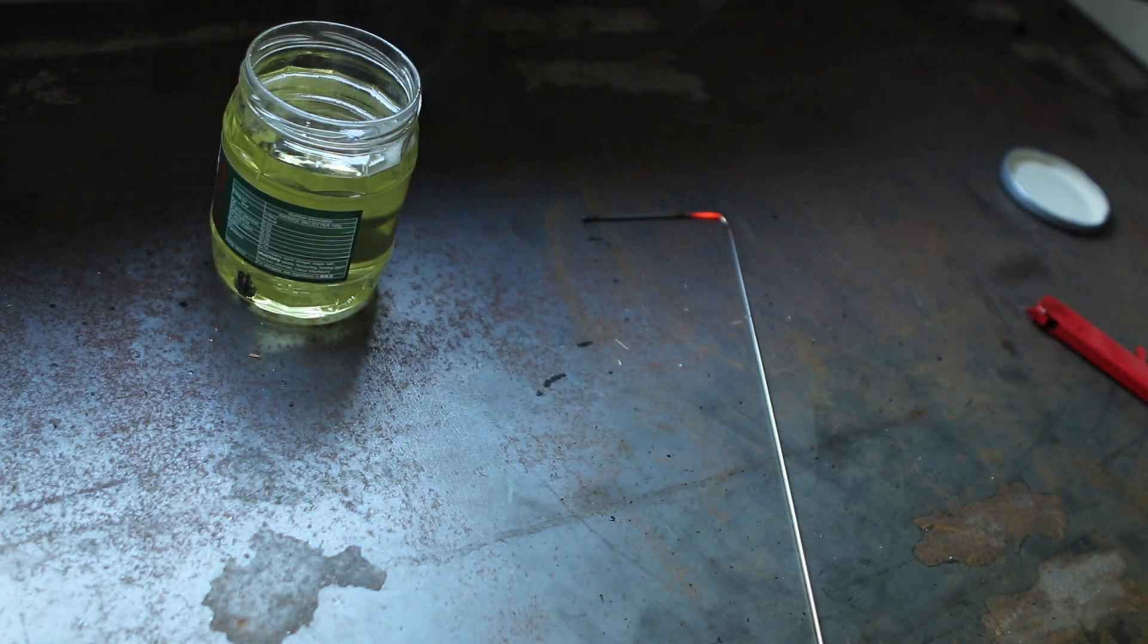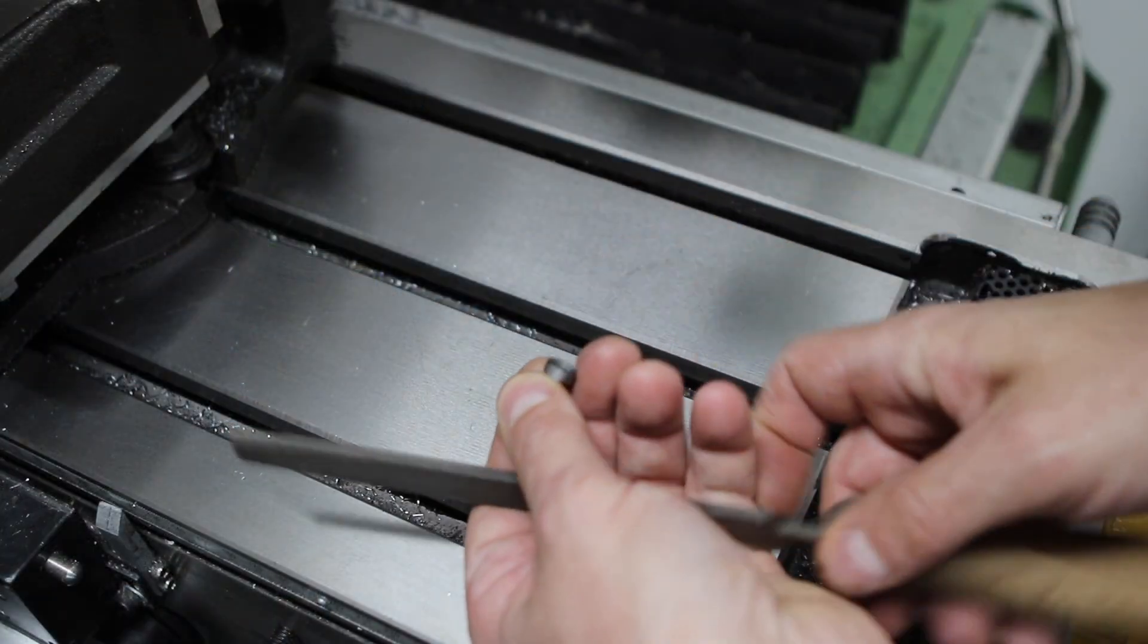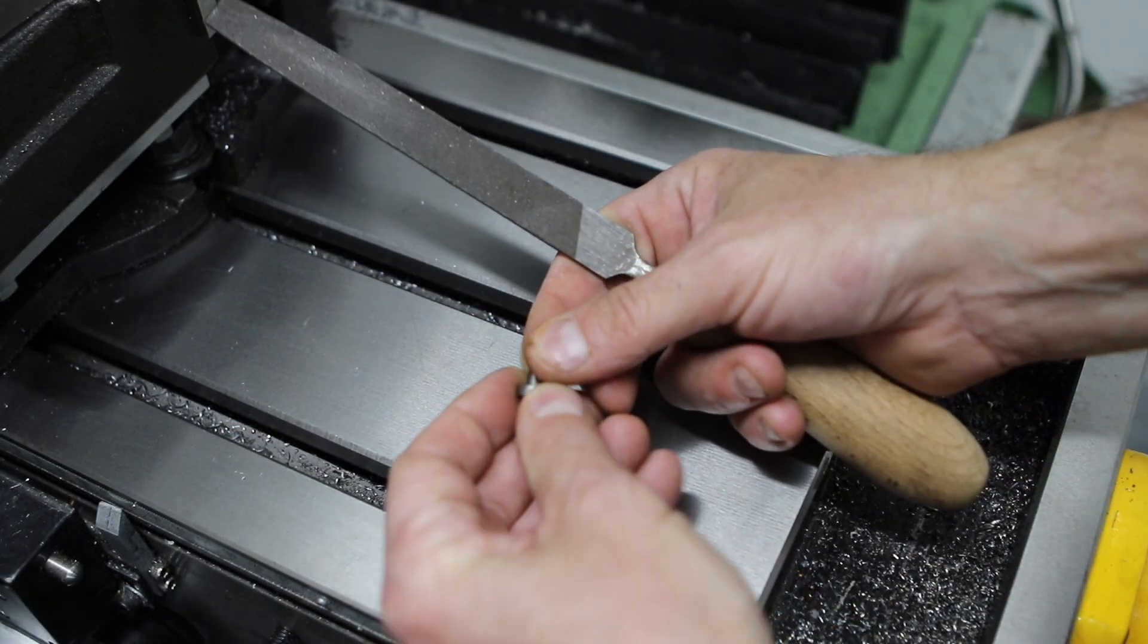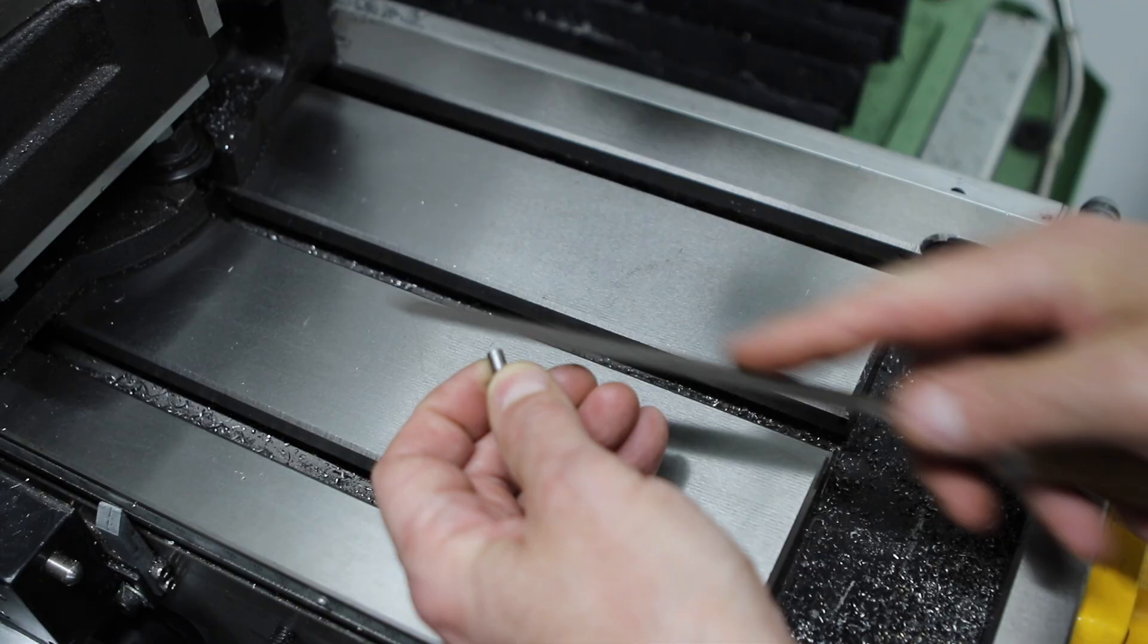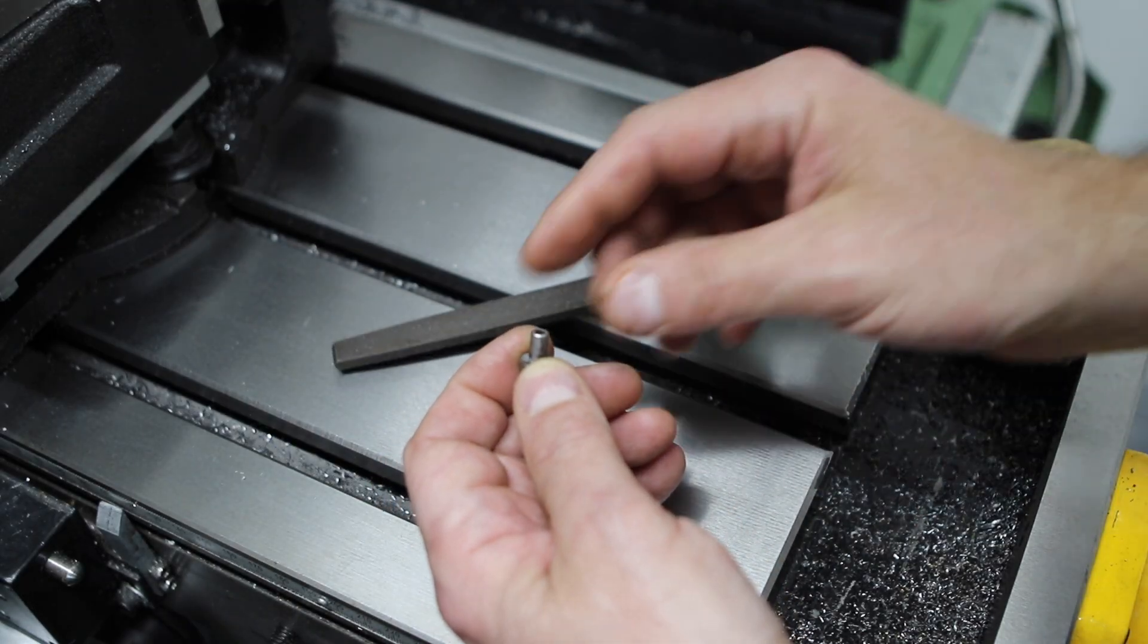Now the best way to test this in the absence of a hardness tester is to simply run a file across the part. If it skates across the part without actually digging in, you know you've got a hard part.